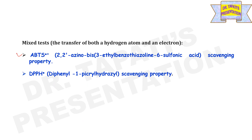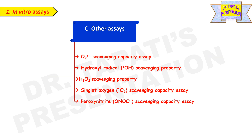ABTS radical cation scavenging activity and DPPH radical scavenging property are considered mixed tests, involving transfer of both a hydrogen atom and an electron. Examples of other in vitro assays include oxygen radical anion scavenging capacity assay, hydroxyl radical scavenging property assay, H2O2 scavenging property assay, singlet oxygen scavenging capacity assay, and peroxynitrite scavenging capacity assay.